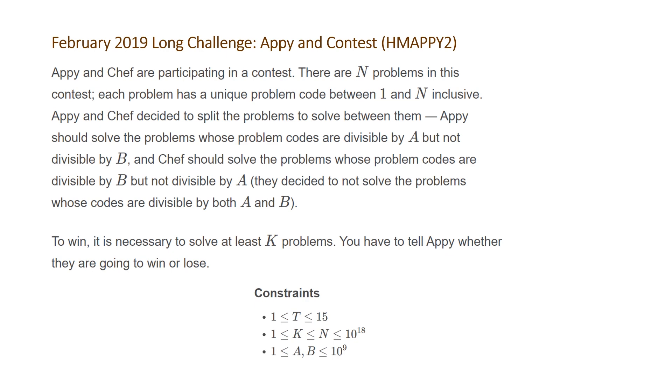To win, it is necessary to solve at least k problems. You have to tell Appy whether they are going to win or lose. And the constraints for this problem, which are going to be very important, are that the number of test cases t is between 1 and 15.